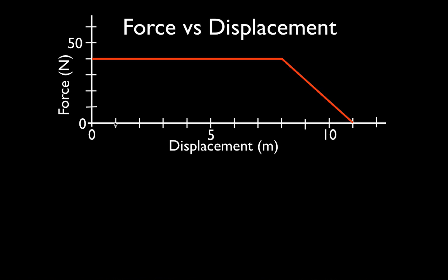Here on the y-axis we have the force measured in newtons. Here on the x-axis we have the displacement — this is not time, this is not force versus time, this is force versus displacement, force versus the distance that the object moves. The x-axis is measured in meters and the y-axis is measured in newtons.